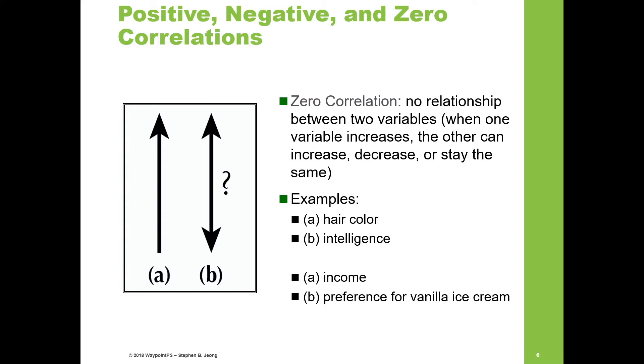Income and preference for vanilla ice cream—it's hard to predict whether a person will like vanilla ice cream or some other flavor based solely on their income. These two examples indicate zero correlation or near zero correlation.